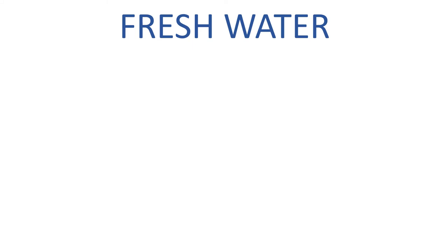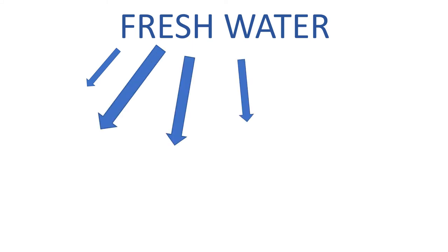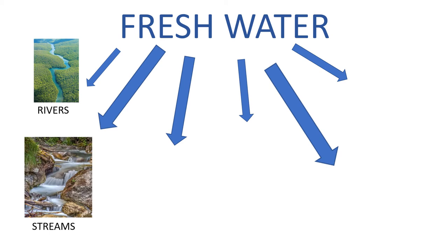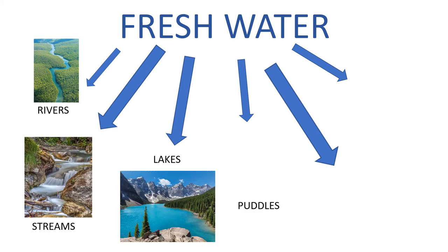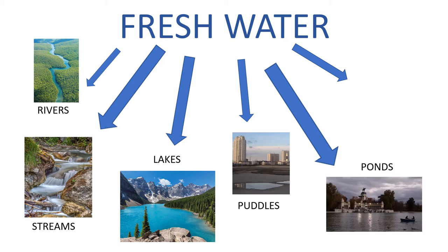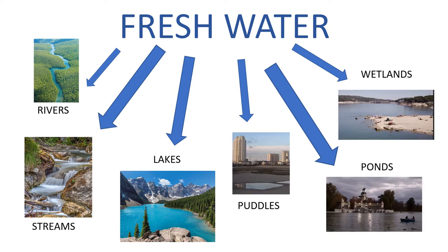Fresh water can be found in six different places around the world. The first one is rivers, then streams, lakes, puddles, ponds and wetlands.